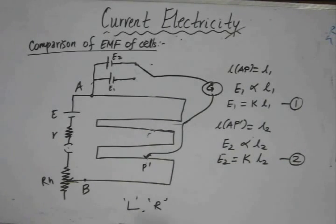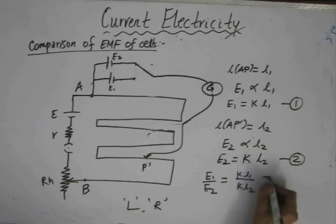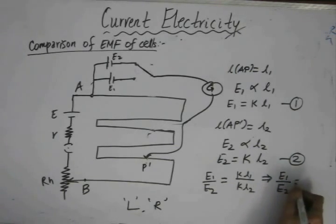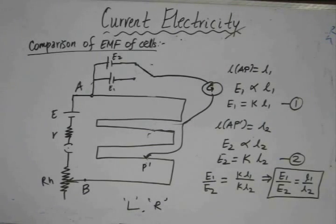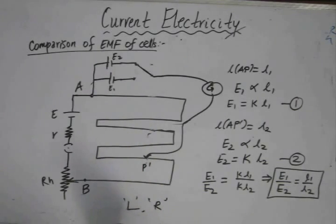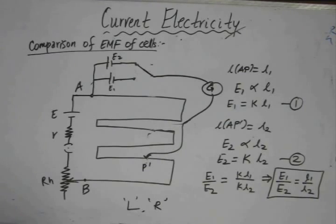From equations one and two, we can compare the EMF of the cells by dividing: E1/E2 = L1/L2. That is how we use a potentiometer wire to compare the EMF of two cells. This can also determine an unknown EMF — if E2 is unknown, we use a standard EMF of known value for E1 and apply the same procedure. L1 and L2 are read directly from the meter scale calibrated beneath the potentiometer wire.